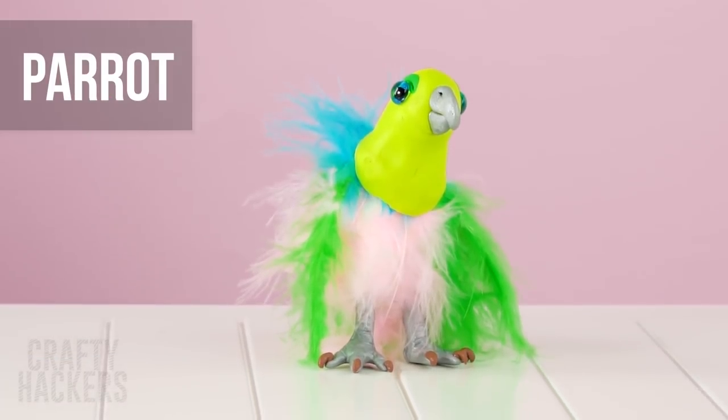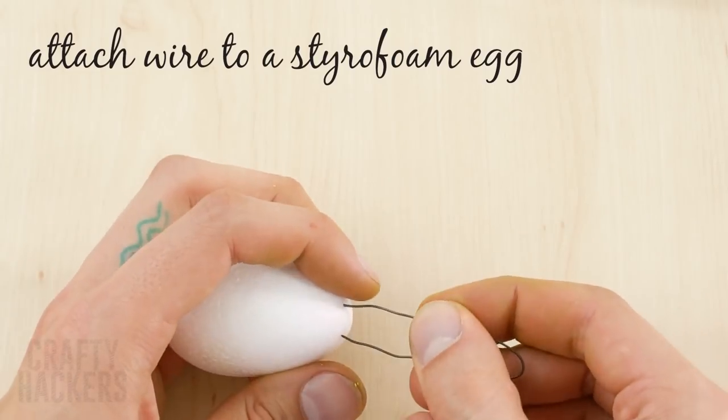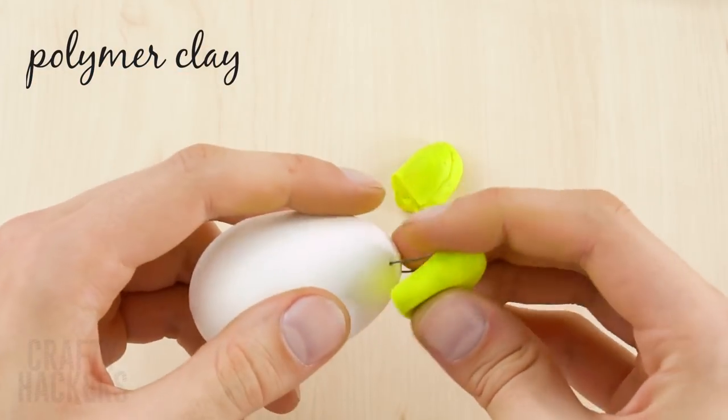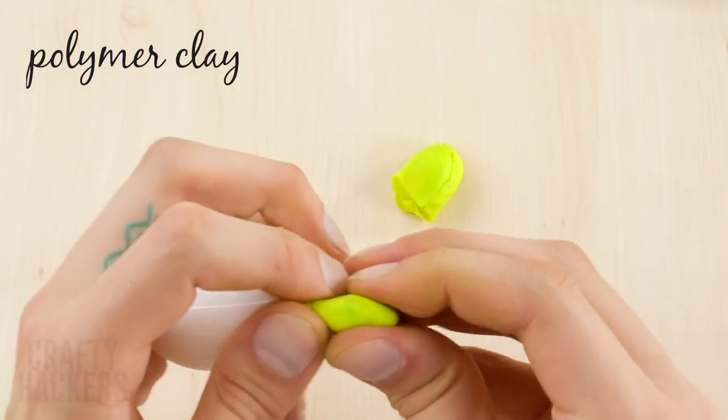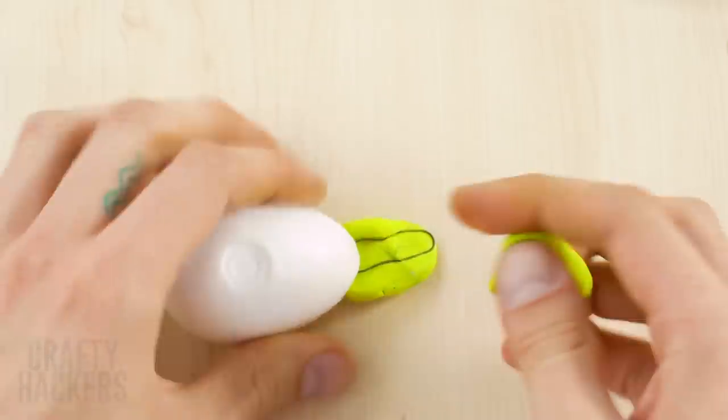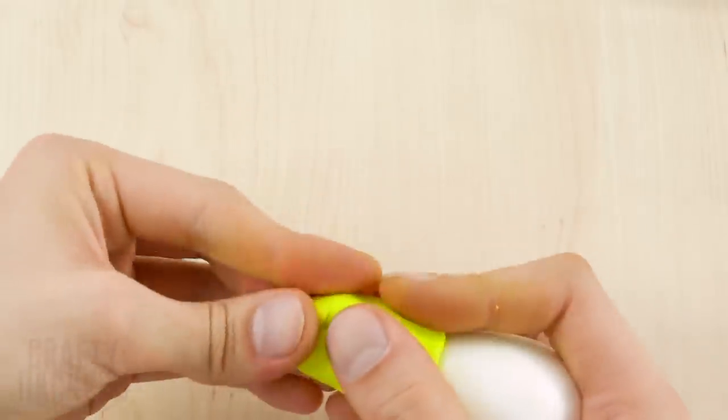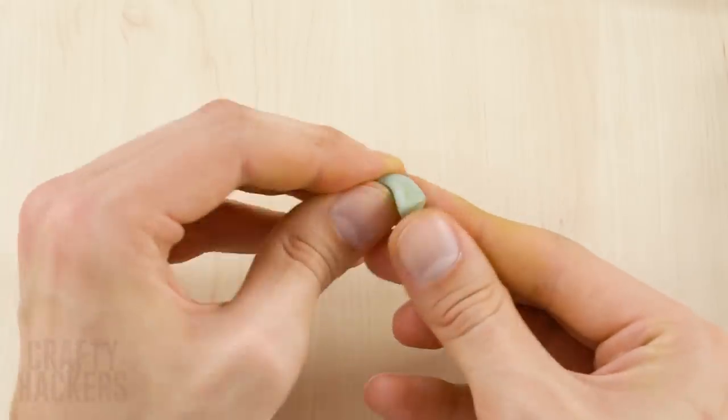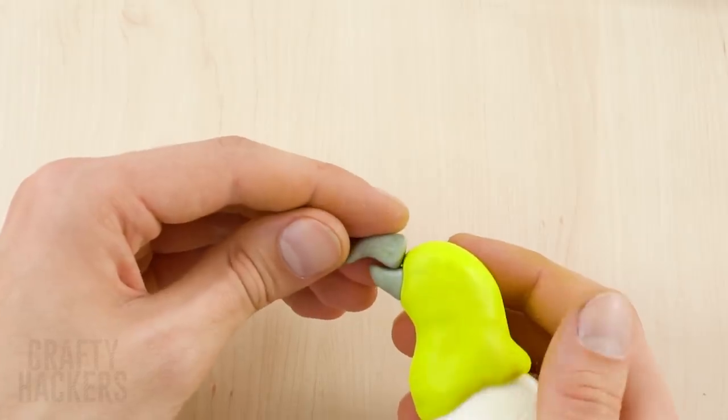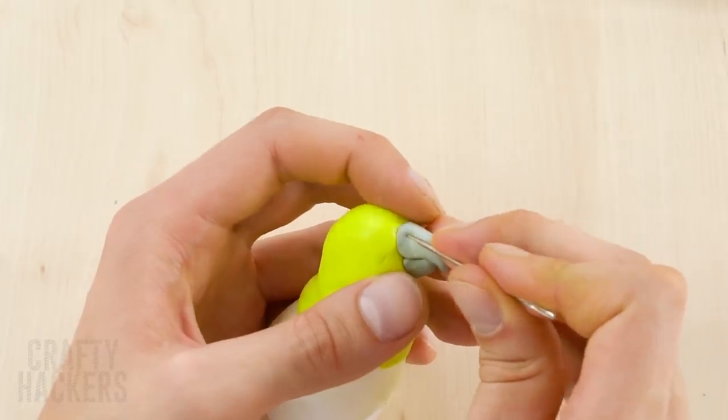Parrot. Barbie wants a pet she can talk to, so let's make her a parrot. First attach a piece of wire to a styrofoam egg, like you see here. Form some yellow polymer clay around the wire. Mold it into the shape of a parrot's head. Make the beak with two smaller pieces of grey polymer clay.